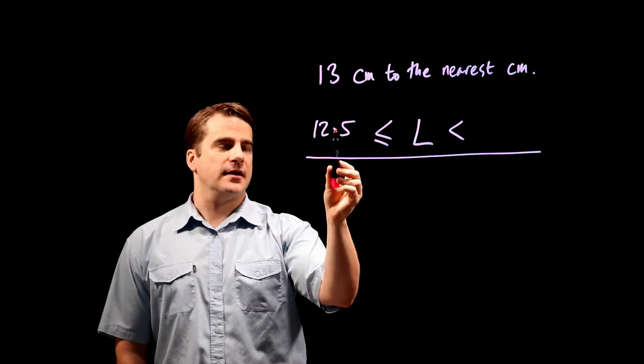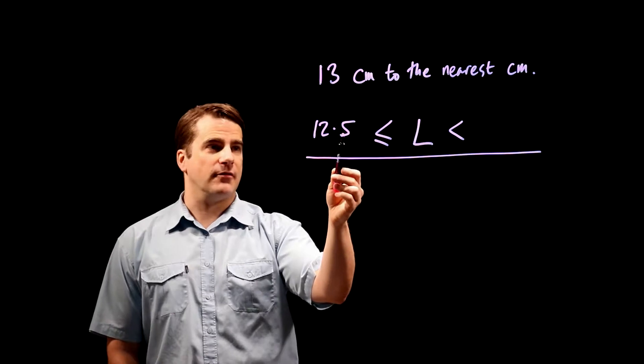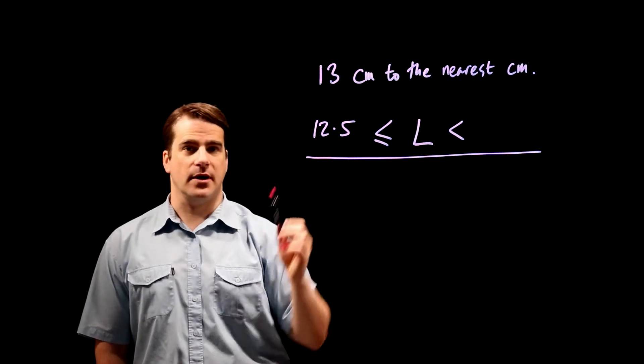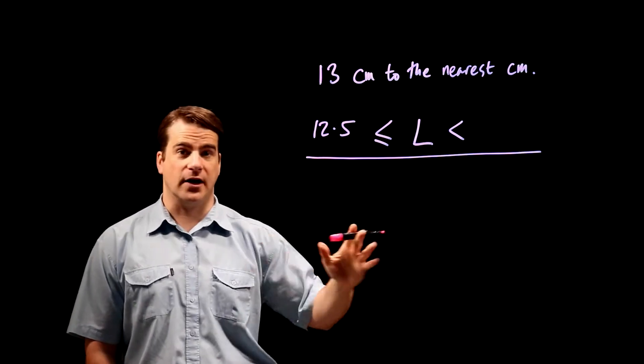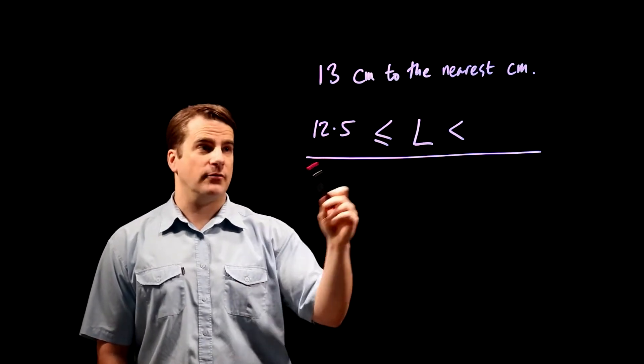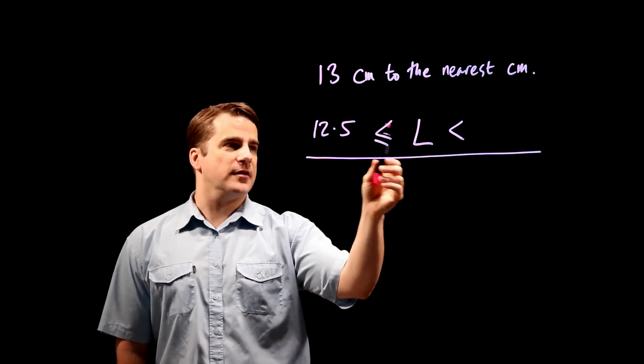if anything is 0.5 or 0.6 or whatever, anything above 0.5 you round up to 13, so that's the lower limit. If it were 12.4 something, 12.4999, you would round down to 12. So L must be greater than or equal to 12.5.